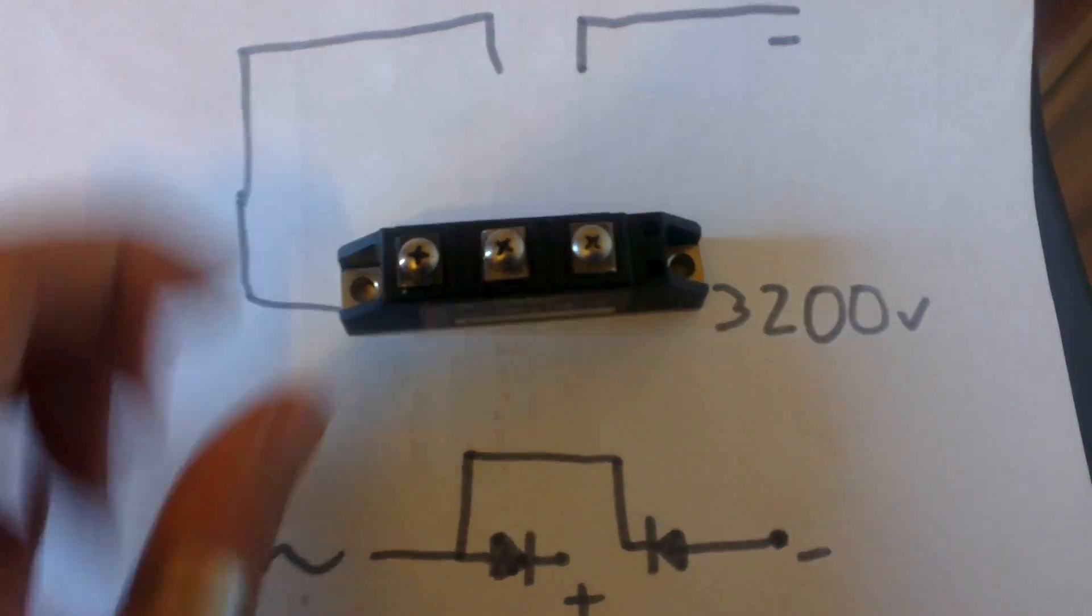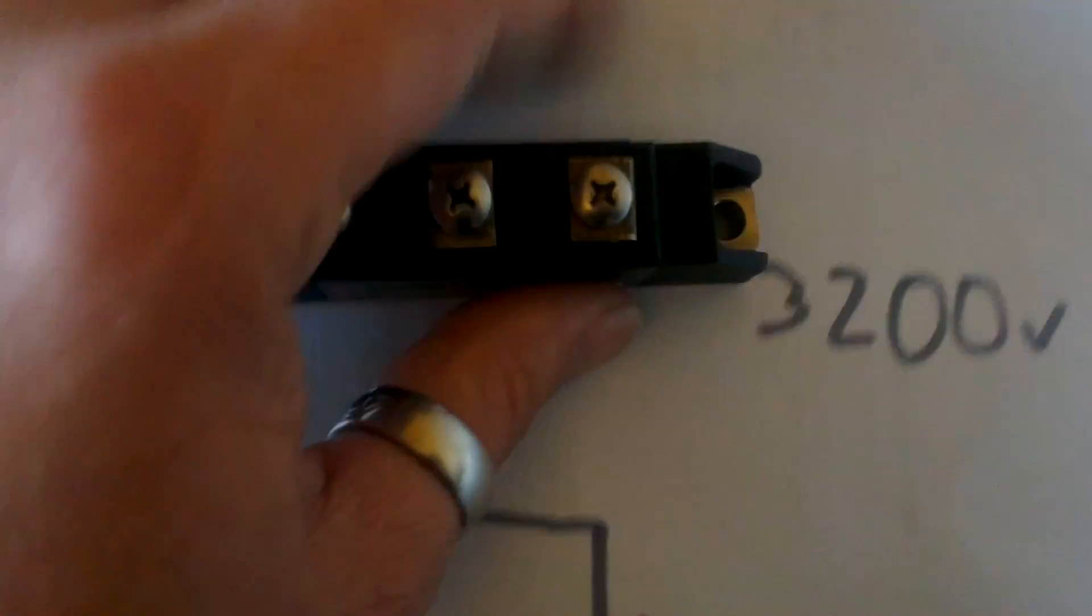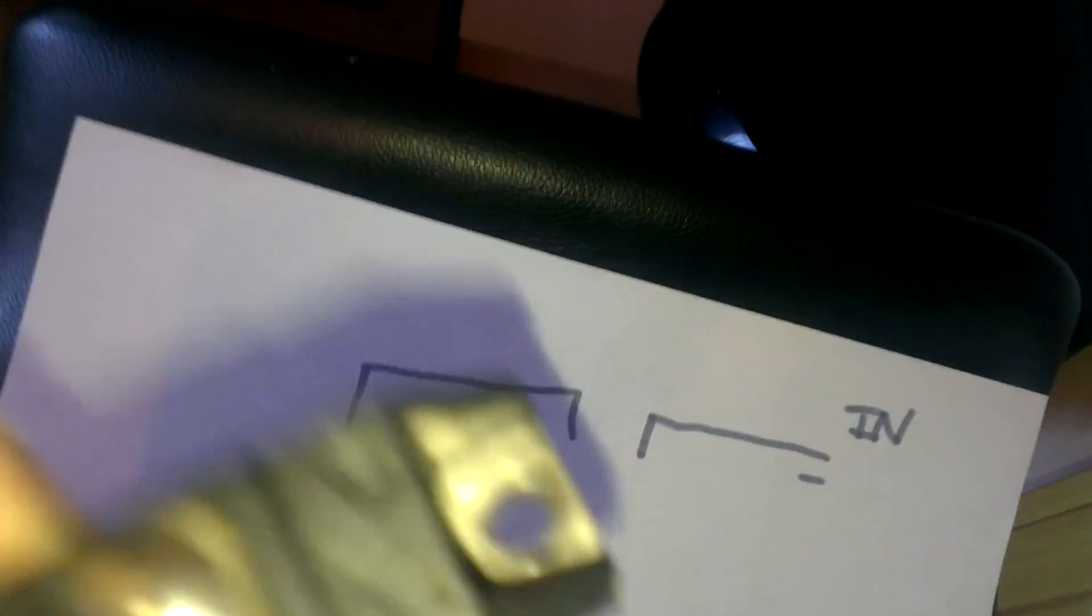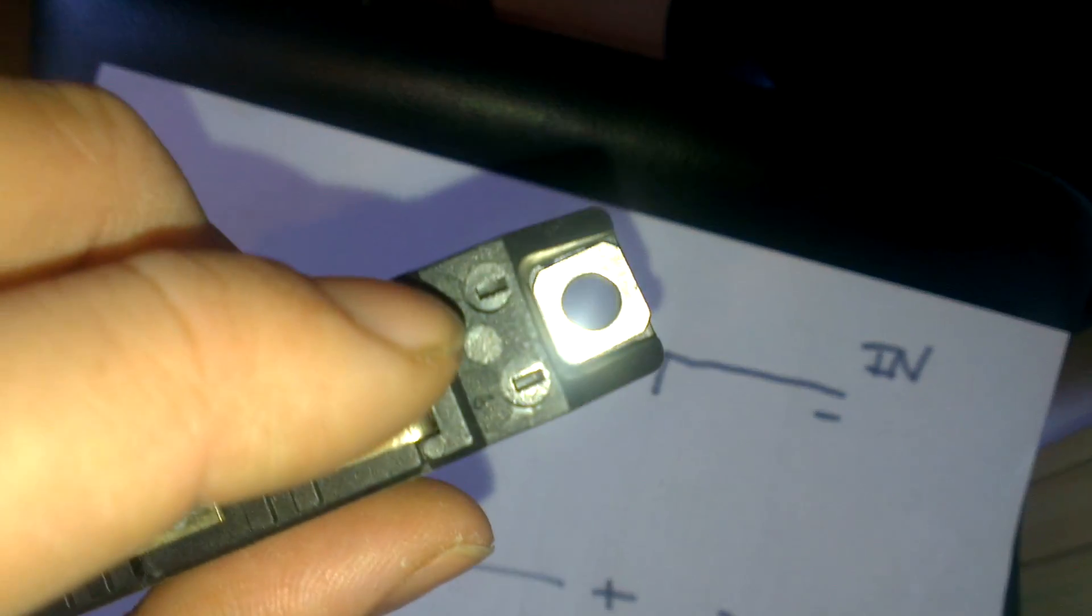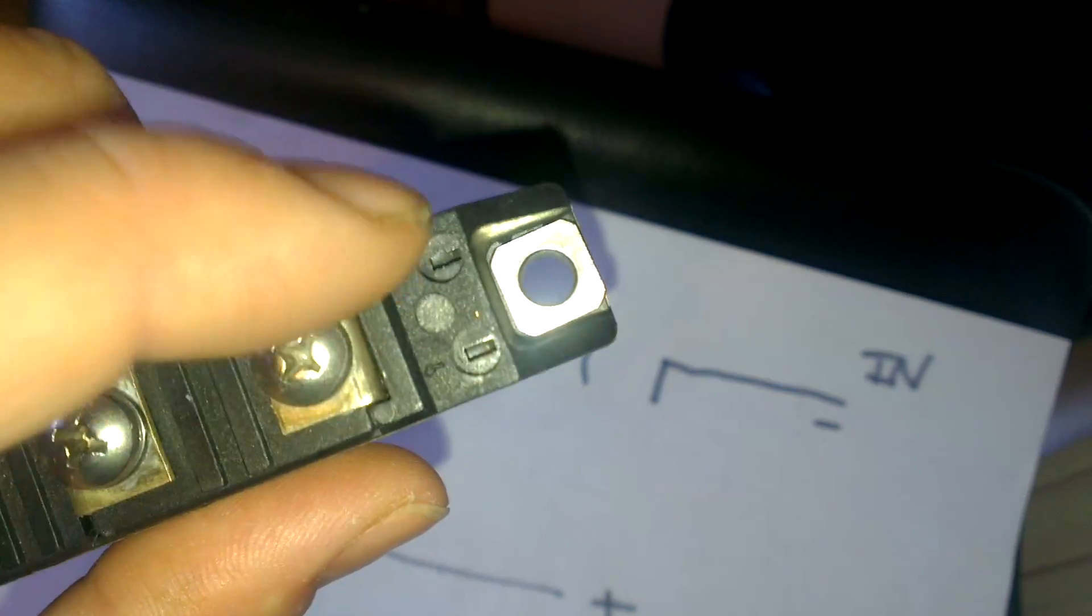Now, it's not an IGBT, so it's not a switching one. Normally, there'd be little pins here - if I can get a picture of that with the flash on. Normally, there'd be a pin there and a pin there to switch the gates. This is just standard.